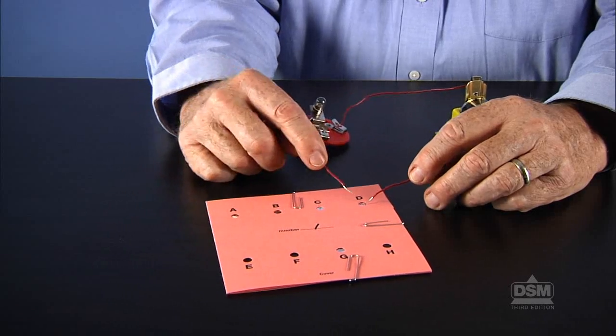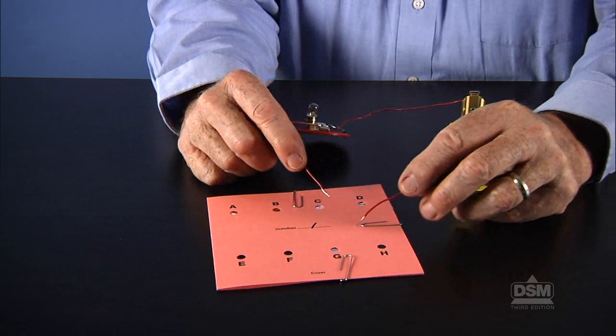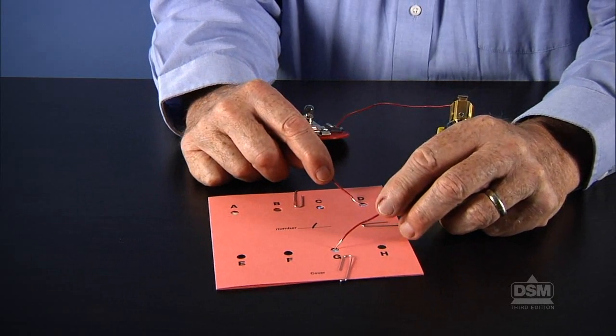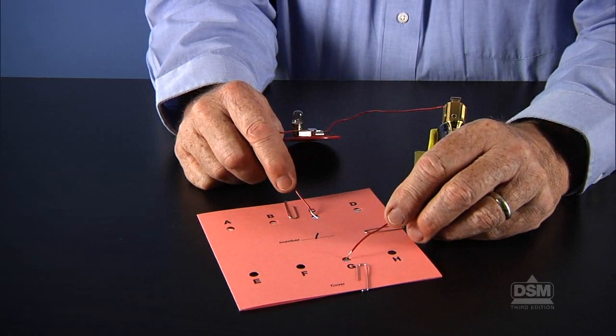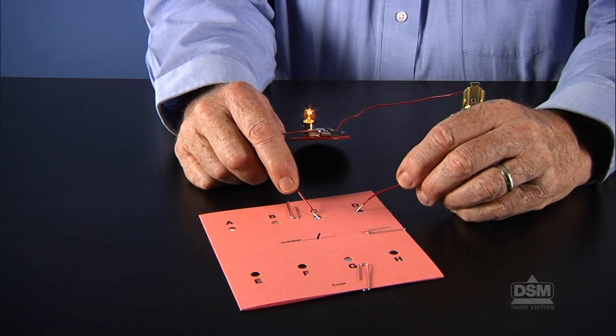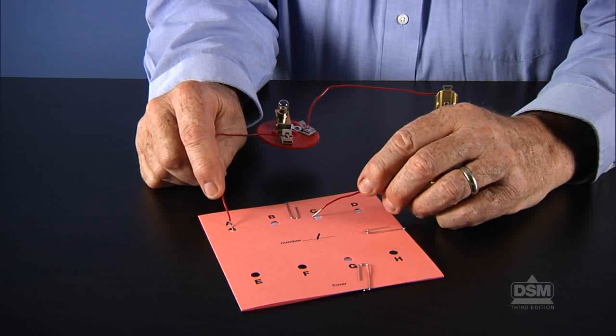For instance, if the bulb lights when a wire is placed on each hole, the circuit formed is closed, and the holes must be connected by a conductor. If the bulb does not light, then the circuit formed is not closed. Therefore, the holes must not be connected by a conductor.